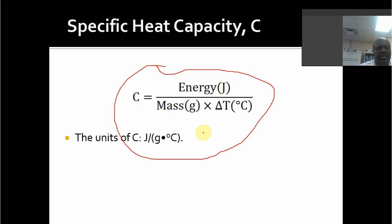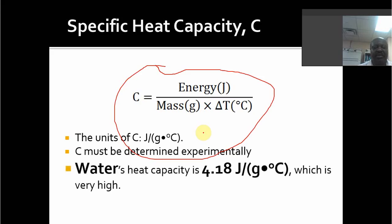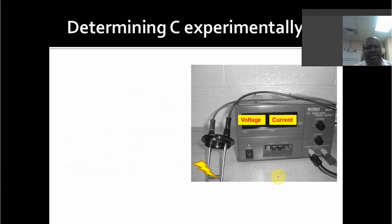The units of c will be joules per gram per degree centigrade. C must be determined experimentally — nature doesn't care about our preferences. You've probably encountered the fact that water has a specific heat capacity of 4.18 joules per gram per degree centigrade, which is quite high compared to many other substances. That's why water is used for cooling purposes.